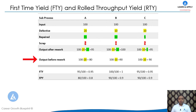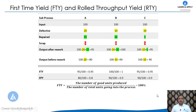For Process B the output before rework is 90, and for Process C it is also 90. Now, as per the definition, First Time Yield is calculated as the number of good units produced divided by the total number of units going into the process.